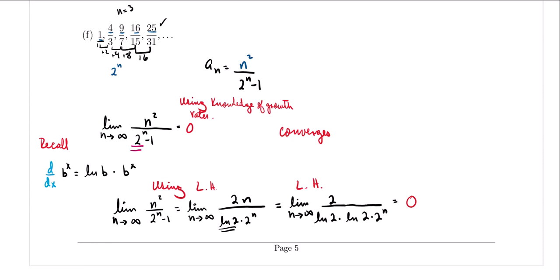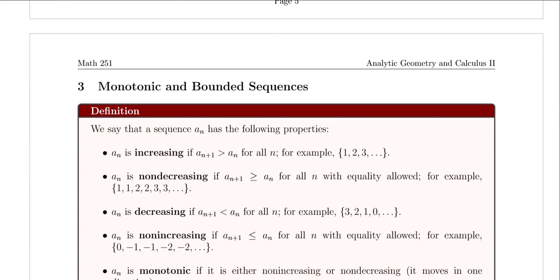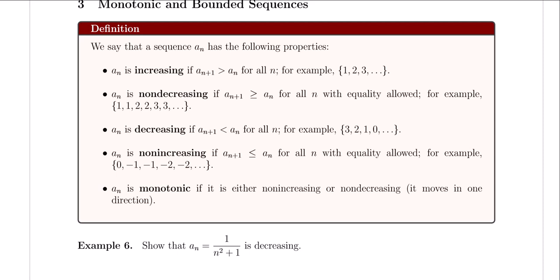Now that we've discussed limiting values, let's discuss some properties of sequences. We say that a sequence a_n is increasing if a_{n+1} is greater than a_n for all n — meaning each term is larger than the previous term. For example, the sequence 1, 2, 3 is increasing. We say that a sequence is non-decreasing if a_{n+1} is greater than or equal to a_n, so equality is allowed. An example of a non-decreasing sequence is 1, 1, 2, 2, 3, 3.